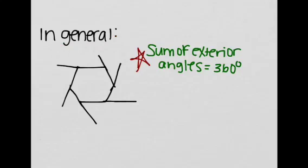Okay, in general, the sum of the exterior angles is equal to 360, no matter how many sides the polygon has.